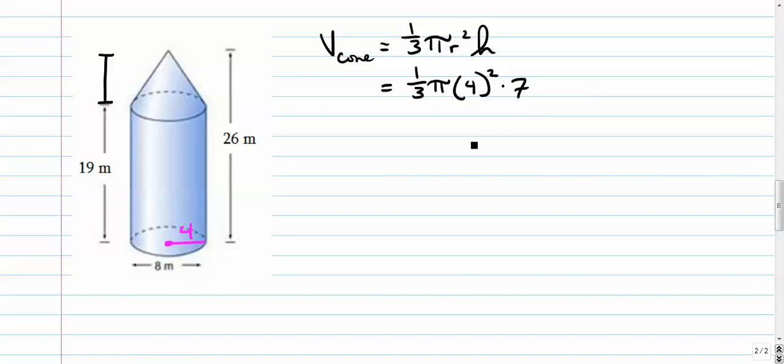And we're going to add that to the volume of the cylinder, which is just pi r squared h. Pi, the radius is 4, squared times h. The h, the height of the cylinder is 19.